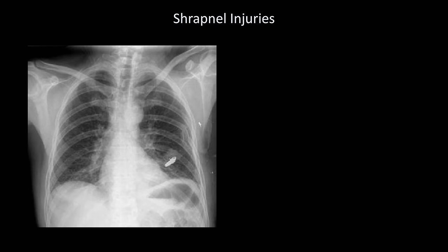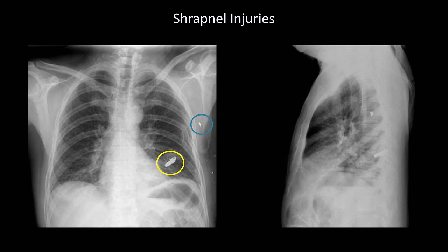Depending upon where you practice medicine, another soft tissue abnormality that may be seen is shrapnel injury. Here is an x-ray of an acutely wounded soldier — there are a number of small metallic objects that have penetrated his body on the left side. One is clearly extra-thoracic, but the largest fragment appears to be within the left lung. However, x-rays are just two-dimensional projections of a three-dimensional body. On the lateral film, the largest fragment is probably posterior to the lungs, sitting between two ribs, with a prominent rib fracture visible on the PA film suggesting the fragment struck and ricocheted.